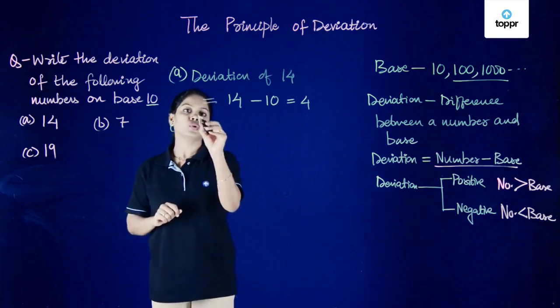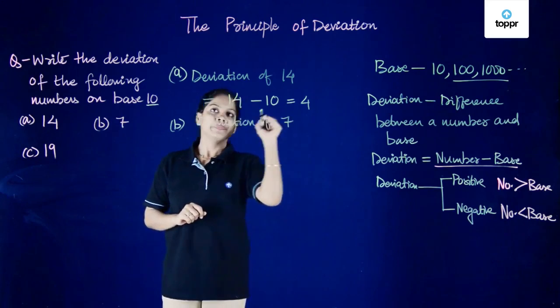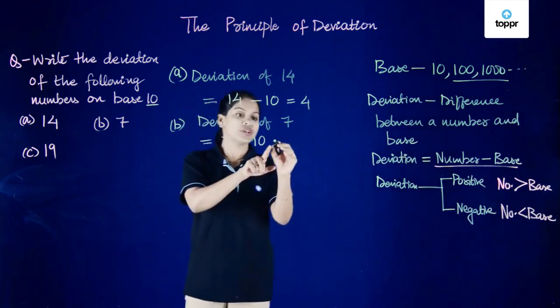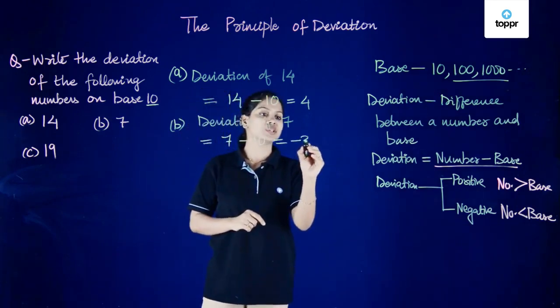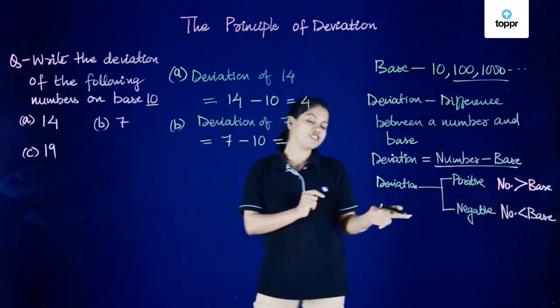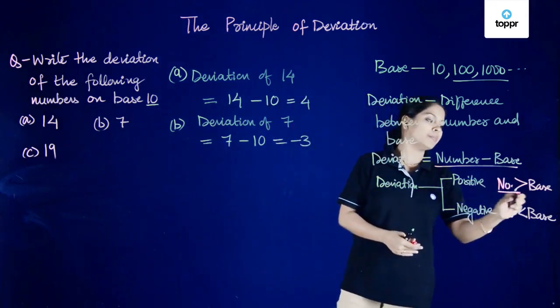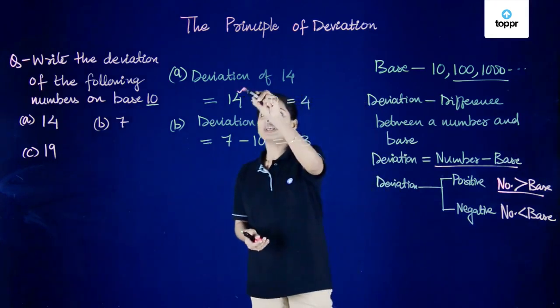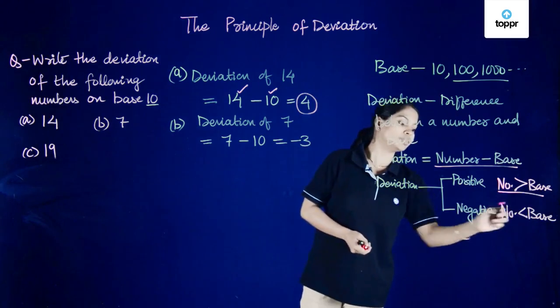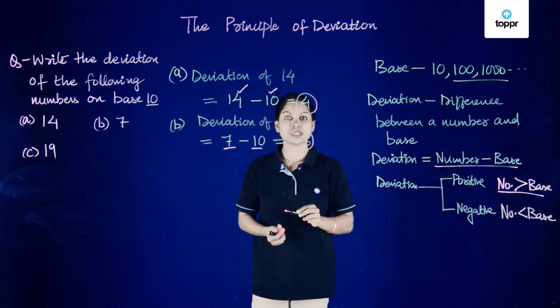Let's move on to bit B. Here we have 7. So deviation of 7 is equal to number, that is 7, minus base, that is equal to 10. So 7 minus 10 gives us minus 3. Going back to what we discussed, when number is greater than the base, 14 greater than 10, we have a positive deviation. Number smaller than the base gives a negative deviation. 7 smaller than 10 gives us negative deviation minus 3.